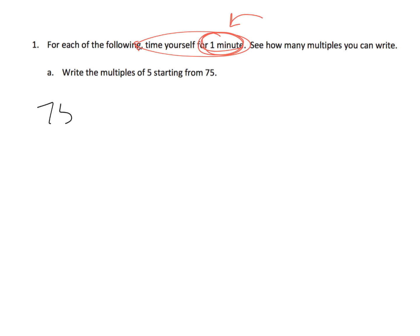But the idea would be, start with 75, and let's do the multiples of 5. So that would be 75, 80, 85, 90, 95, 100, 105, etc. And that's the idea. I don't think we need to belabor it for a whole minute.